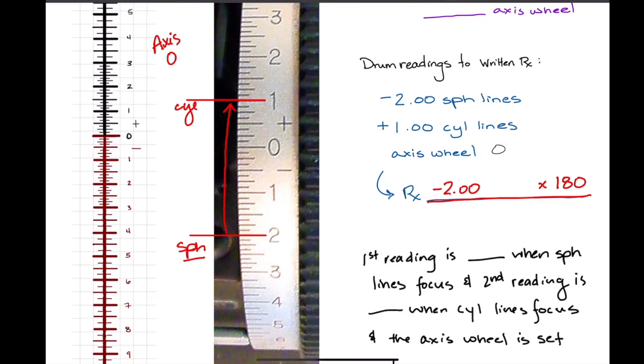And then what we want to know is how far from this minus 2 to the plus 1 did we go. And when you're looking at a power drum, I always just count them up. I say, okay, from minus 2 to plus 1 was one jump, two jumps, three. And so we went three diopters in a plus direction, so we went plus 3. Does that make sense?